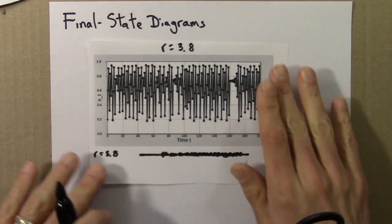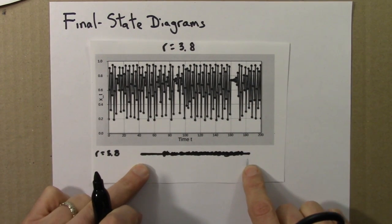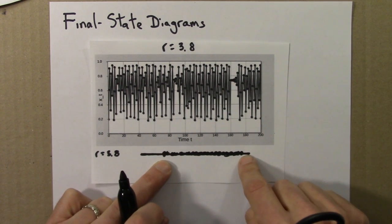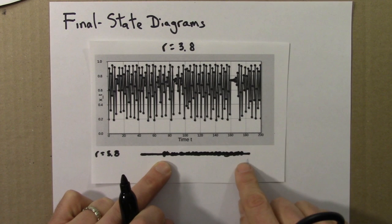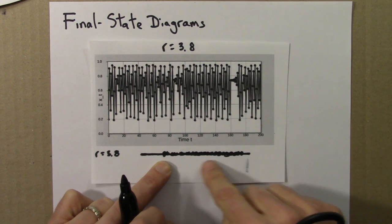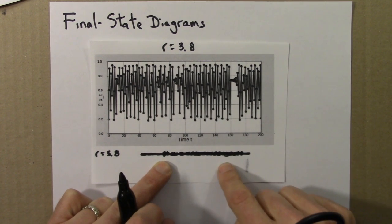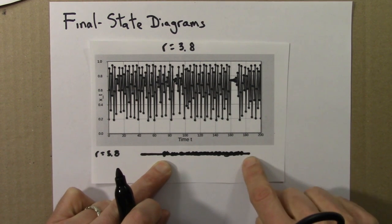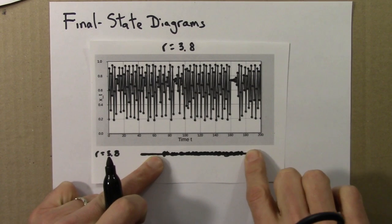And I would interpret this, if I saw this as a final state diagram, I'd say, ah, okay. It's not settling down. The orbit is not becoming periodic. If it was periodic, there would just be 2 or 4 or however many the period was, dots here. But the fact that this gets filled up and appears solid is an indication that the orbit is aperiodic.